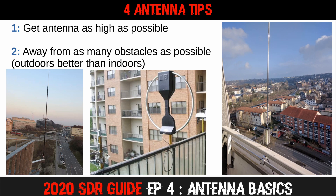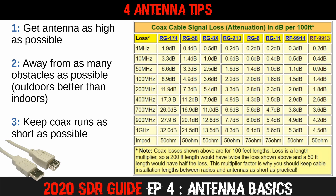Tip number three is to keep coax runs as short as possible. Coax is the type of cable that runs between your antenna and your software defined radio. As the electrical current flows from the antenna along this cable it loses power — the longer the cable run the greater the loss. The following table shows how much signal is lost along different types of coax cable at different frequencies; the higher the frequency the more loss. At 400 megahertz, RG174 coax loses 17.3 decibels across a hundred feet of cable. However RG213 only loses 4.8 decibels, and the more expensive RF9913 loses only 2.6 decibels over the same 100 feet.